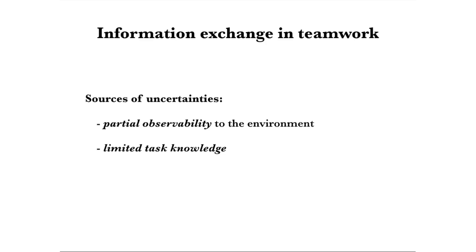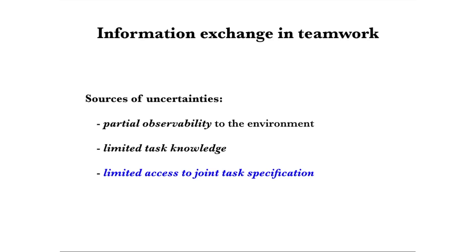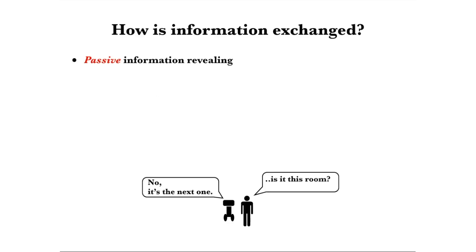Common sources of uncertainties are partial observability to the environment, limited or incomplete task knowledge and specification. Particularly in teamwork, there is also the uncertainty contributed by the lack of direct access to a partner's thoughts, relevant for her task-relevant information.